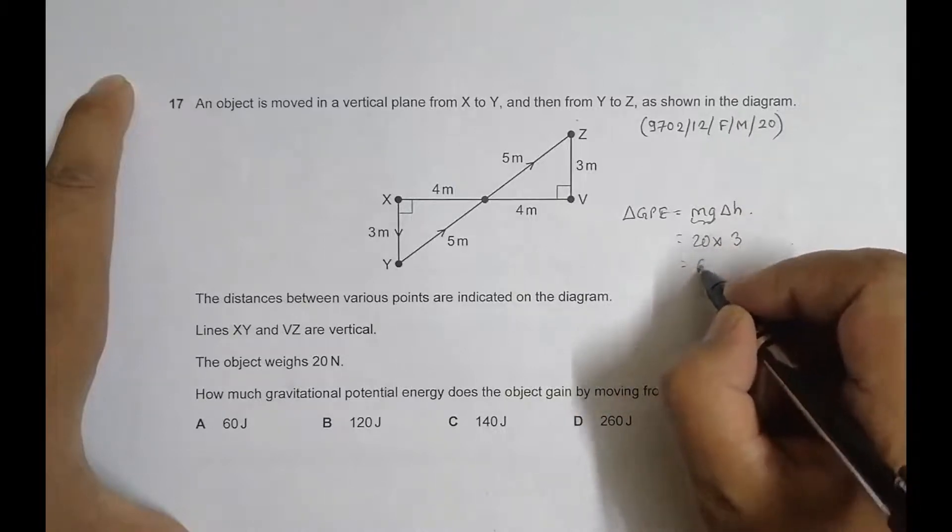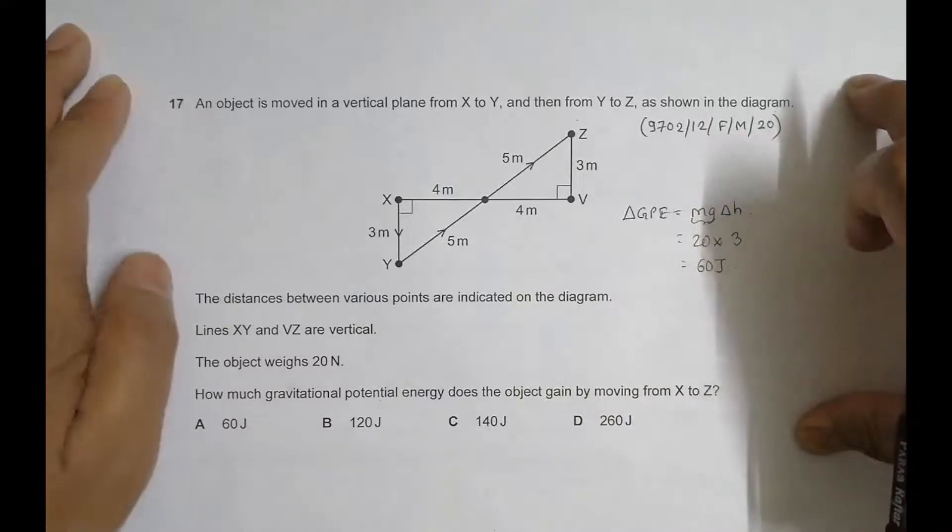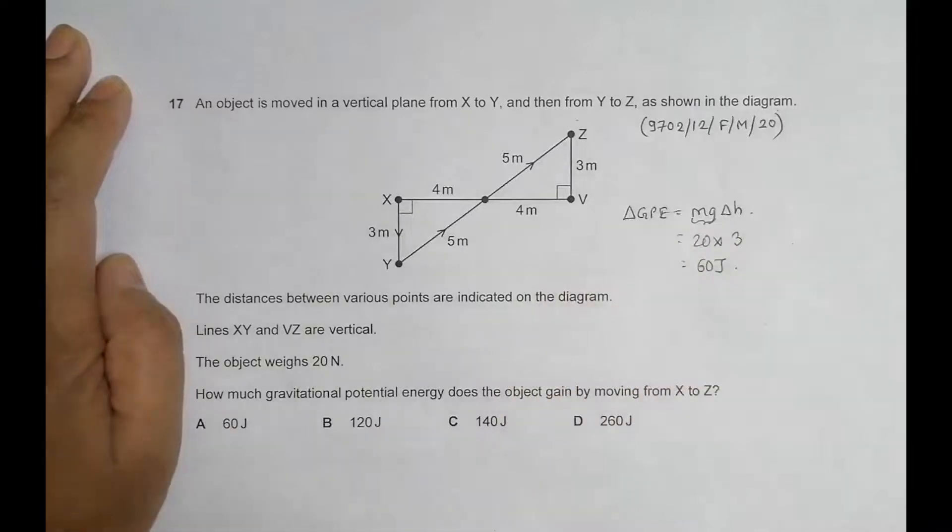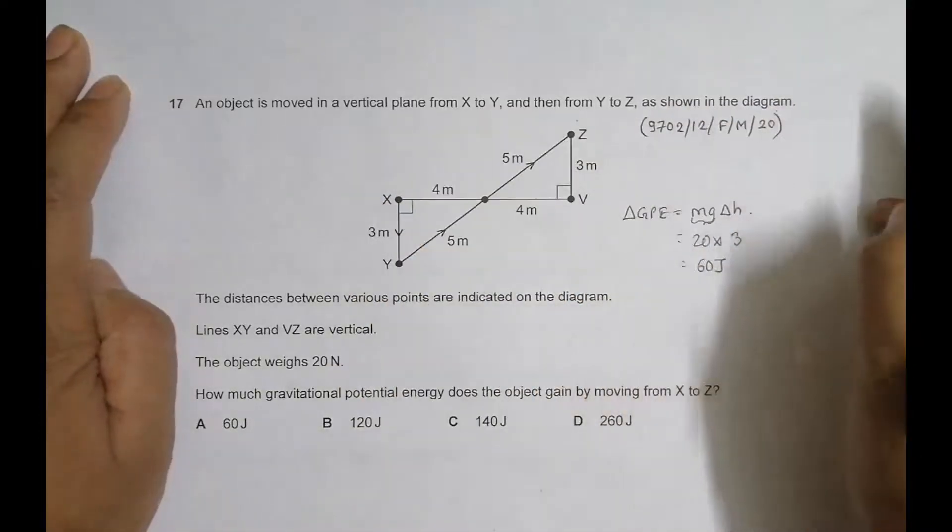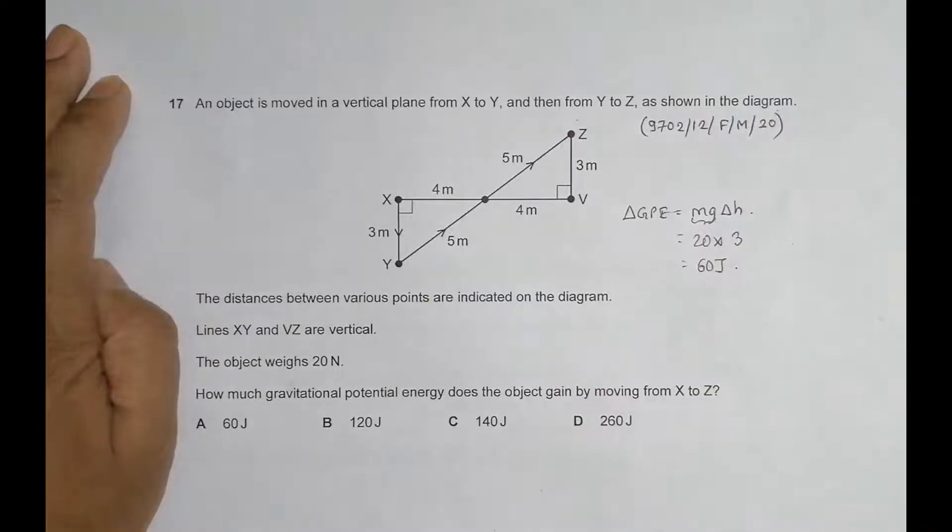So that becomes 20 times 3, which is 60 Joules. So all these distances had been given to baffle us a bit, trying to confuse us.